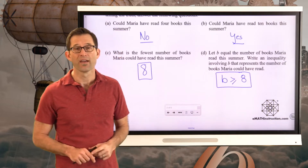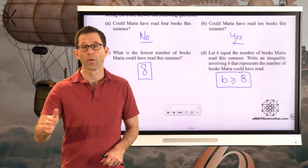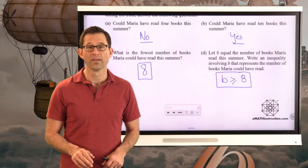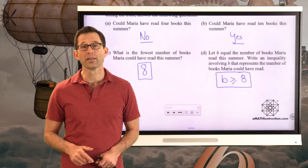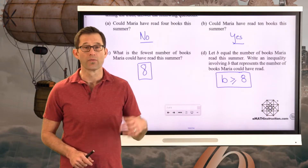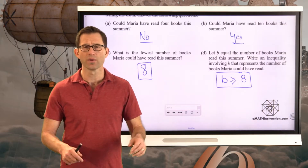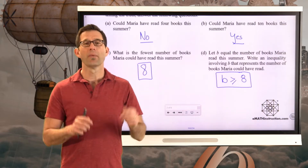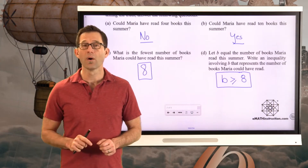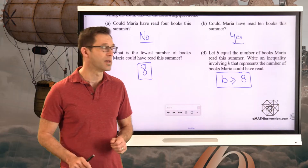If I said I ate at least 10 hamburgers, then I ate 10 or more, so h would be greater than or equal to 10. If I said I ran at least two miles, then I could have run two, two and a half, three, four, 4.7 — the number of miles would be greater than or equal to two. Let's keep going and work with some more phrases that we can translate into inequalities.